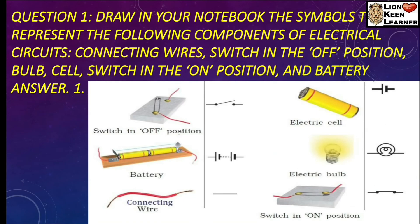Question No. 1: Draw in your notebook the symbols to represent the following components of electrical circuits: connecting wires, switch in the off position, bulb, cell, switch in the on position and battery. तो इसमें हम जानेंगे किस प्रकार से कौन-कौन से ऐसे symbols होते हैं जो किसी भी electrical circuit के अंदर काम में आते हैं. Answer No. 1: